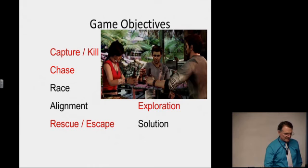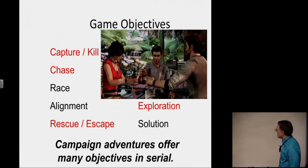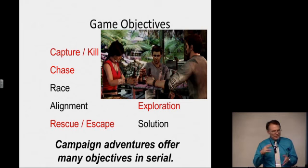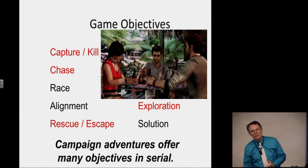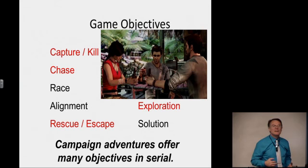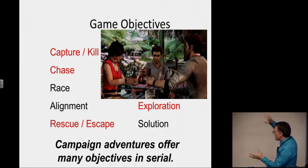Many campaign adventure games — here we have Uncharted 2 — feature capture-kill, chase, rescue, escape, and exploration in series. You may not do all of them at the same time, but you'll spend time trying to capture and kill, sometimes chasing or being chased, sometimes rescuing and escaping, sometimes exploring. You could build a novel-length adventure by combining different objectives in series on top of each other.